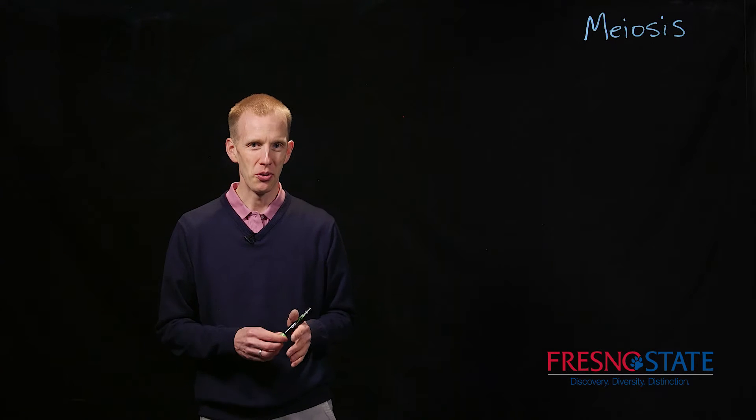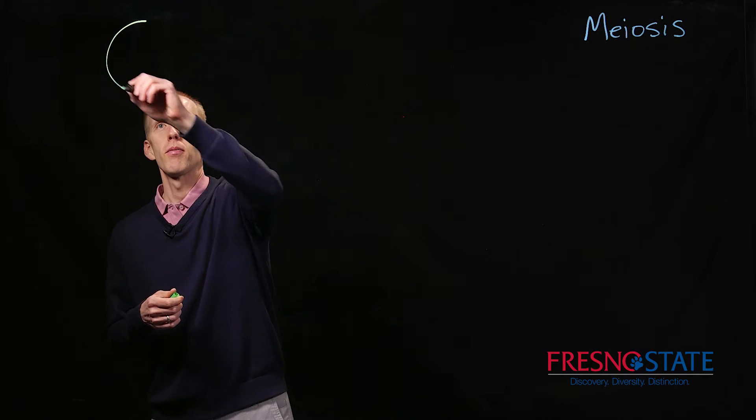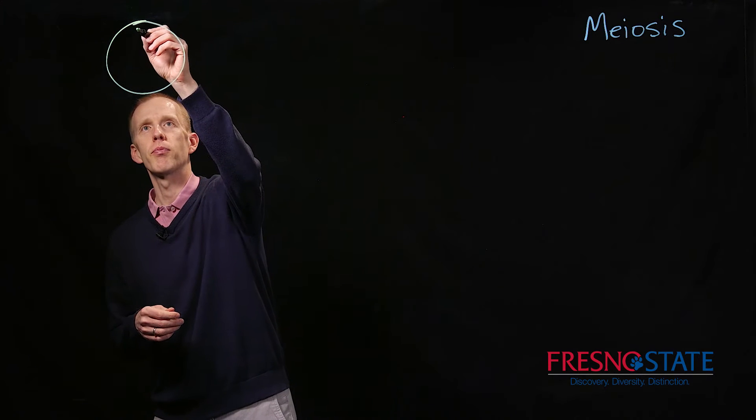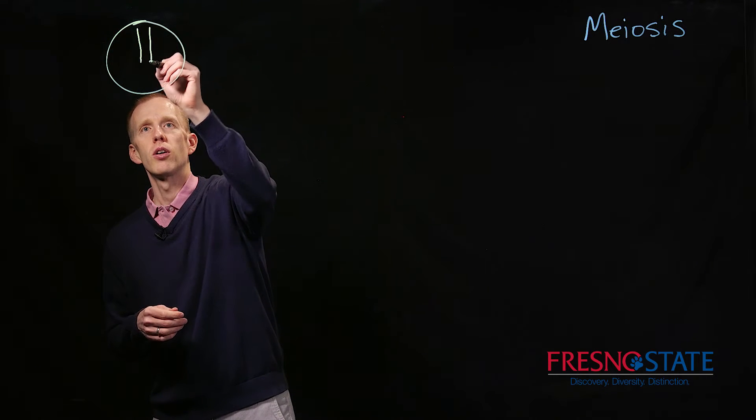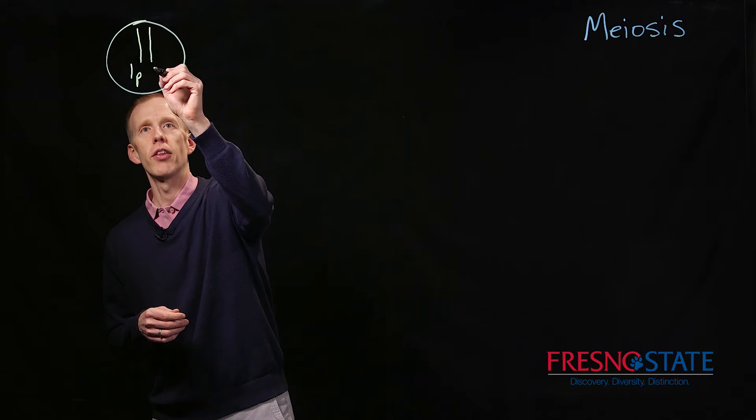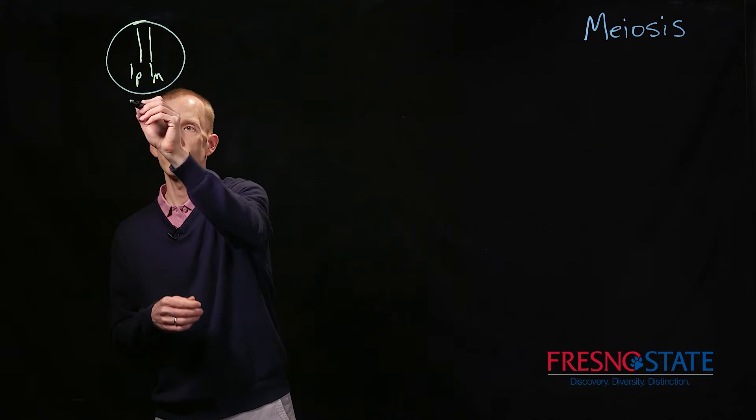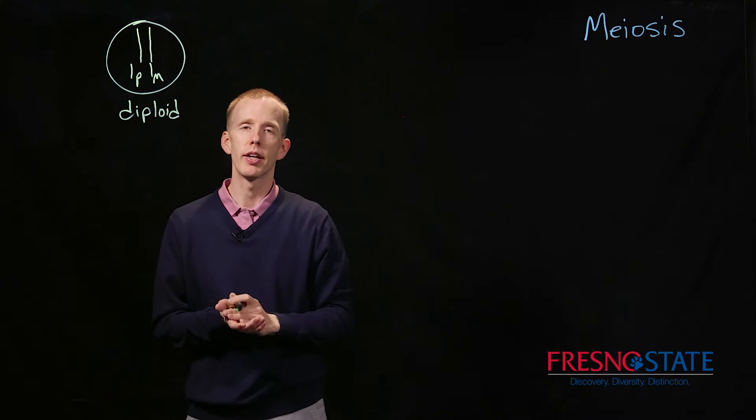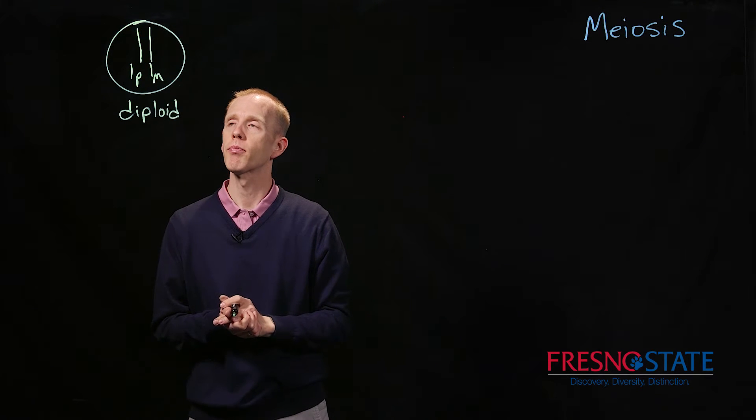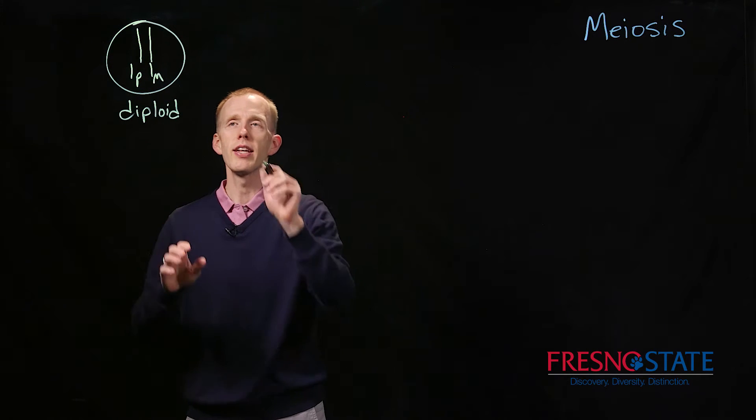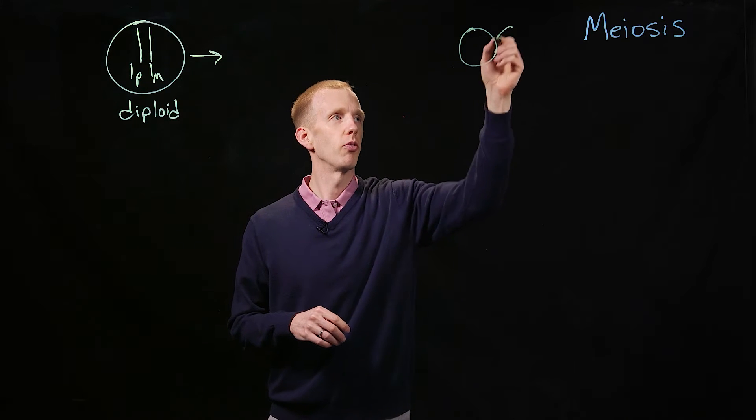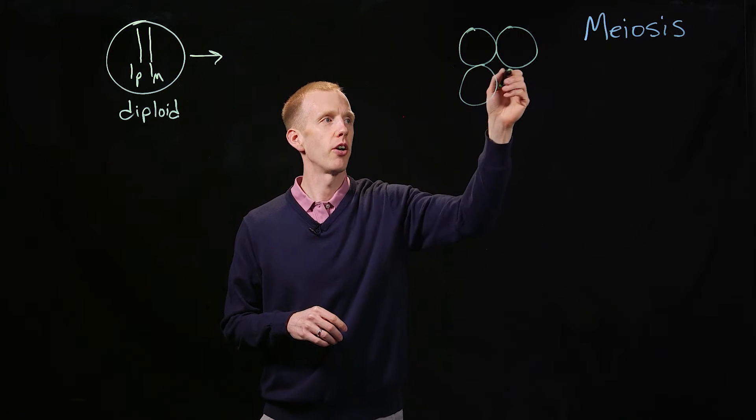We're going to talk now about meiosis, which is the process by which a single cell that has two chromosomes in it, let's say for example chromosome 1 from the father and chromosome 1 from the mother, so we have a diploid organism, each of these lines again representing a double-stranded double helix, how this cell can create gametes that are used for fertilization to pass those genes on to future generations.